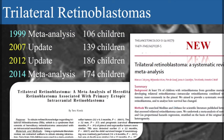I originally published about this in 1999. At that time there were 106 trilateral retinoblastomas, published in Journal of Clinical Oncology, and it's been cited more than 100 times. I did it because I myself didn't really know what to do with these tumours. In the meetings of the International Society of Ocular Oncology, I presented an update in 2007 and in 2012, and the number had increased to 186 children. In this latest meta-analysis it was 174.